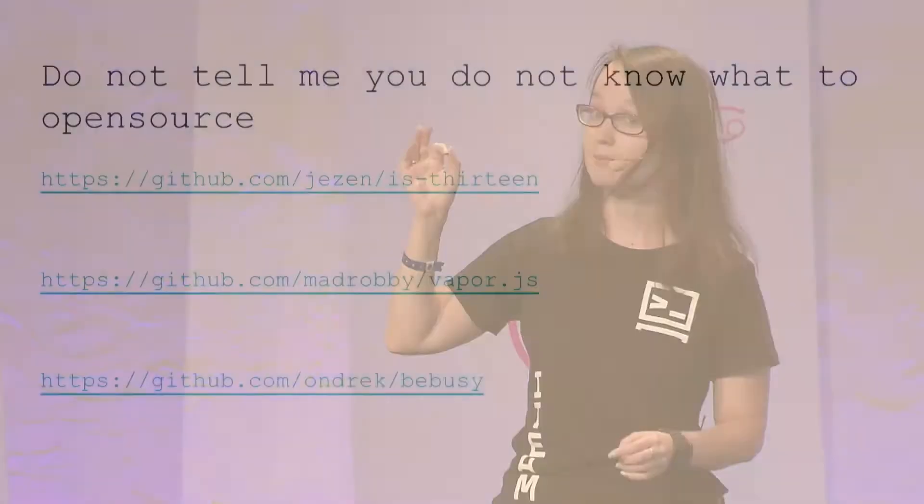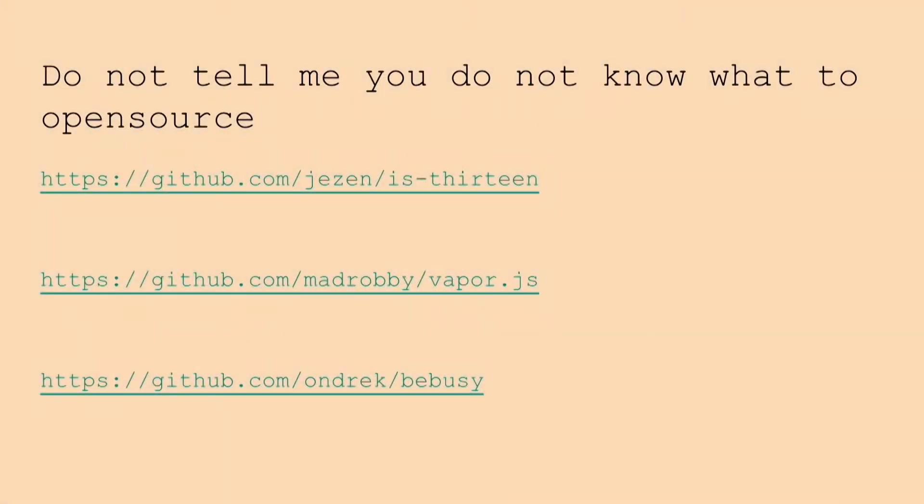First one is JS13. It's a very mature project that checks if a value is equal to 13. It doesn't do it in a simple way — it actually does it in all possible ways ever. And if you don't want to contribute to this project, there is another one. You can create a new one — JS17 — and be your own god in your own project.